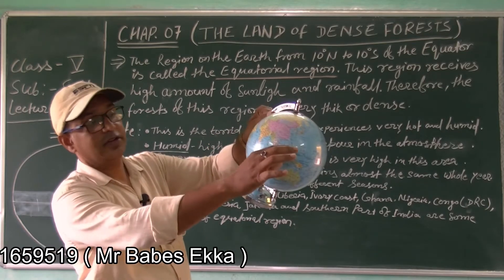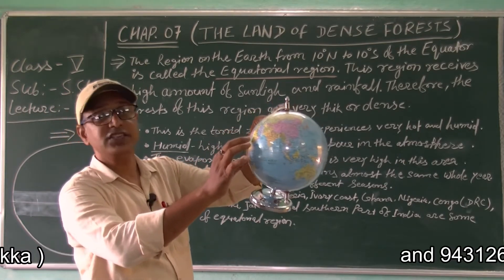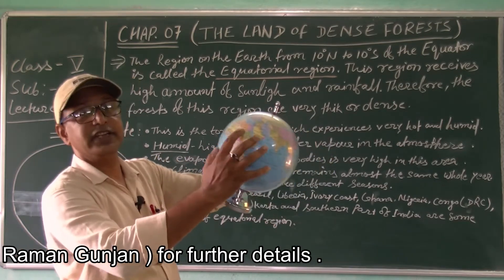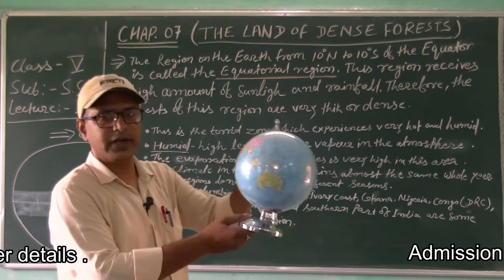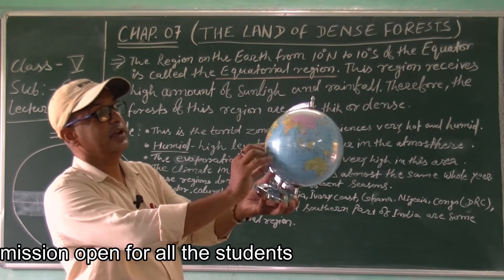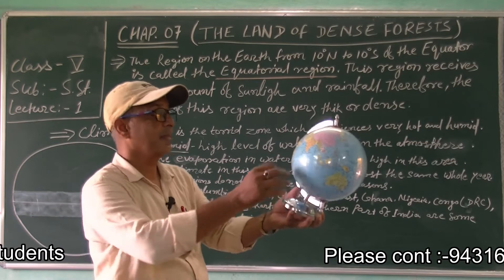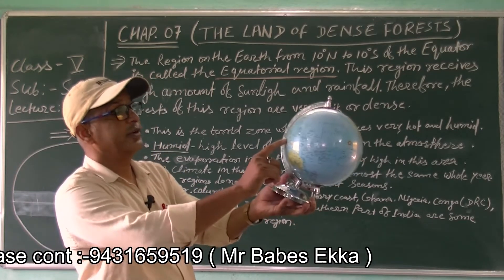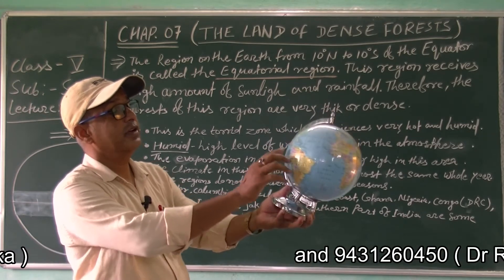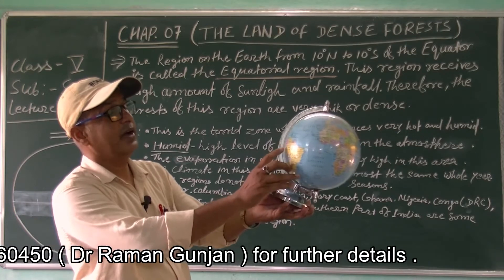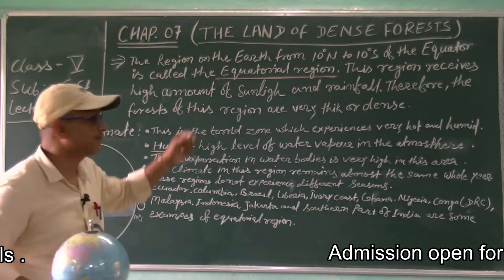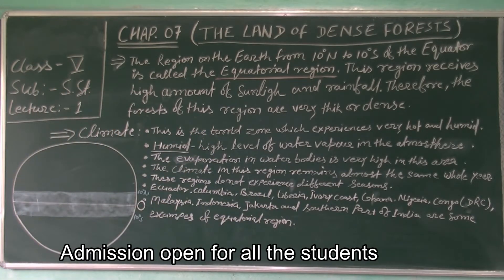Dense forests are located in the equatorial region. We will find them in DRC, Congo, Guinea, Zambia, Indonesia, Malaysia, Jakarta, Java, and Brazil, Colombia, Ecuador, etc. These are the regions where dense forests can be seen.